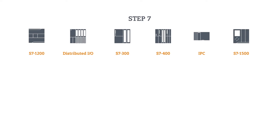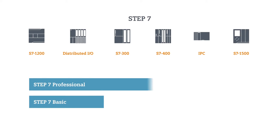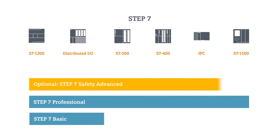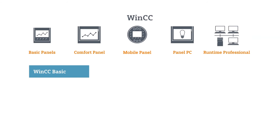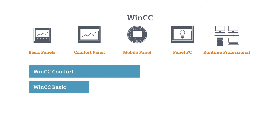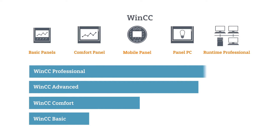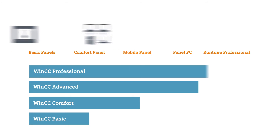If you want to program your SIMATIC controls, the Step 7 engineering tool offers you the right performance package for any control and any scope of functions — even with built-in safety functionality if required. And you can expect the same from the SIMATIC WinCC package, the software for operating devices. The TIA Portal always offers you just the right solution. And not only that — in case your requirements should change in the future, you can easily upgrade to the proper performance package at any time.